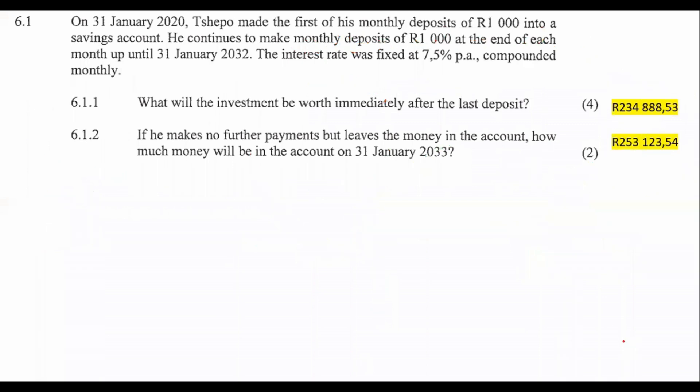Alright, so here's an investment one. Let's have a look. We have a financial maths question. It says on 31 January 2020, let's highlight this. Shepo made the first of his monthly deposits of a thousand rand into a savings account. He continues to make these deposits at the end of each month until 31 January 2032. The interest rate is 7.5% compounded monthly.